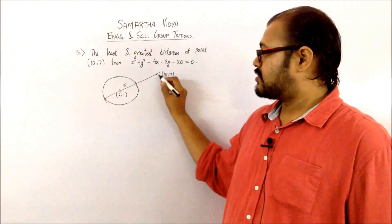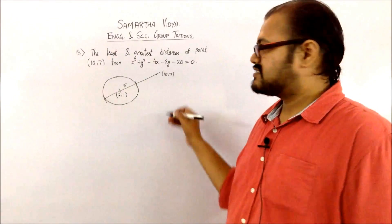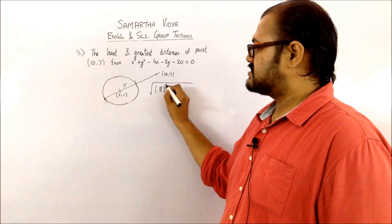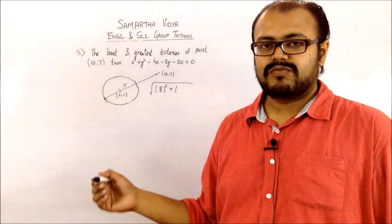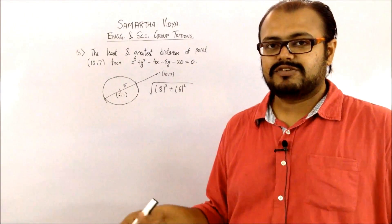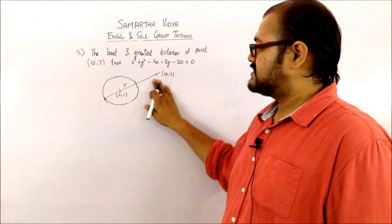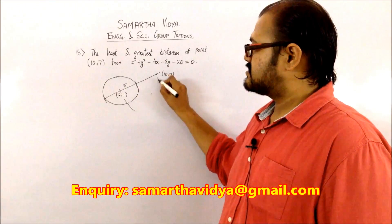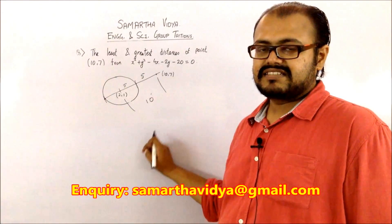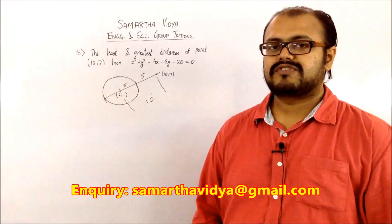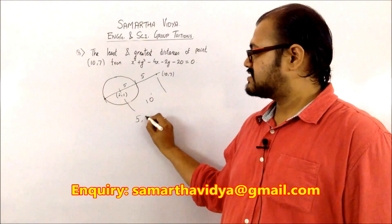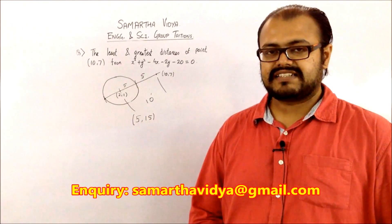Using the distance formula, the distance from (10, 7) to the center (2, 1) is √((10-2)² + (7-1)²) = √(64 + 36) = √100 = 10. Therefore, the least distance is 10 - 5 = 5 and the greatest distance is 10 + 5 = 15. So the answer is (5, 15).